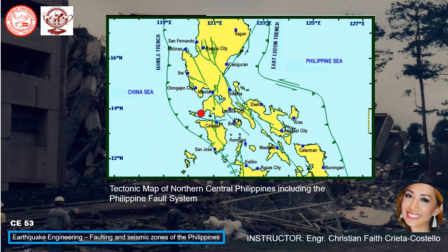This is the tectonic map of northern central Philippines including the Philippine fault system. The next places visible include Burungan, Catanman, Legazpi City, Virac, Masbate, Kalibo, Roxas, Romblon, Sanasi, Calapan, and others.